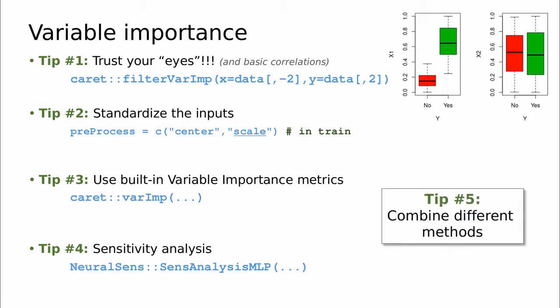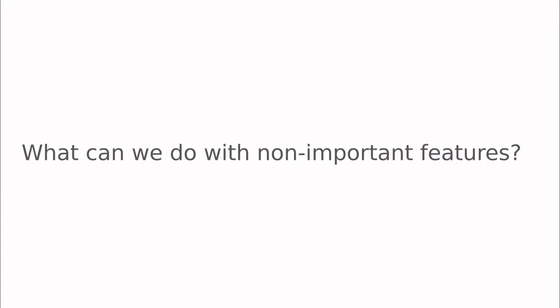Tip number five is the best of all: combine different methods, not just stick to these four ideas. Fit different methods like random forests, trees, support vector machines, neural networks, and make your own mind comparing those methods. So let's go back to the question: what can we do with non-important features? The answer is very simple: remove them. But how can we remove them? There are a couple of approaches.